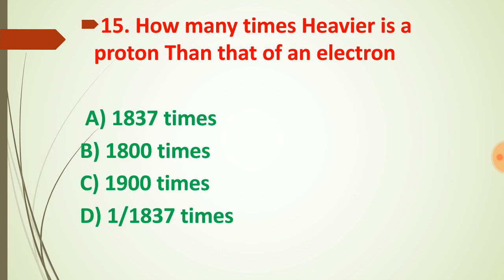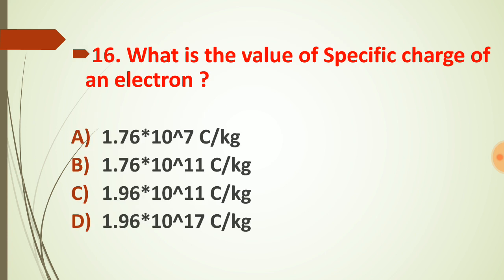Question number fifteen: how many times is a proton heavier than an electron? The answer is 1837 times. If we collect 1837 electrons and measure their mass, it is exactly equal to the mass of one proton. So the mass of one proton equals the mass of 1837 electrons, and option choice A is the correct answer.